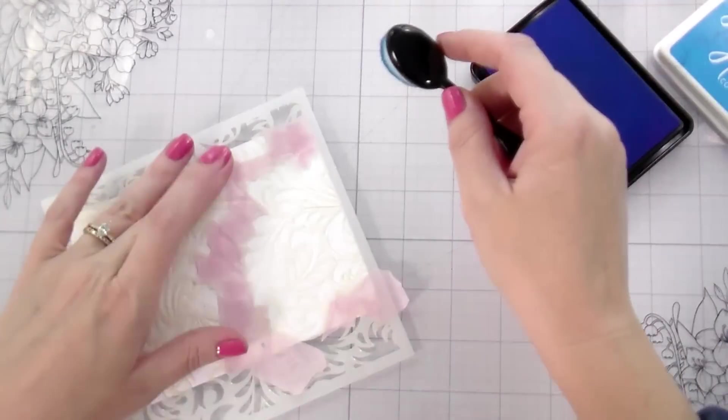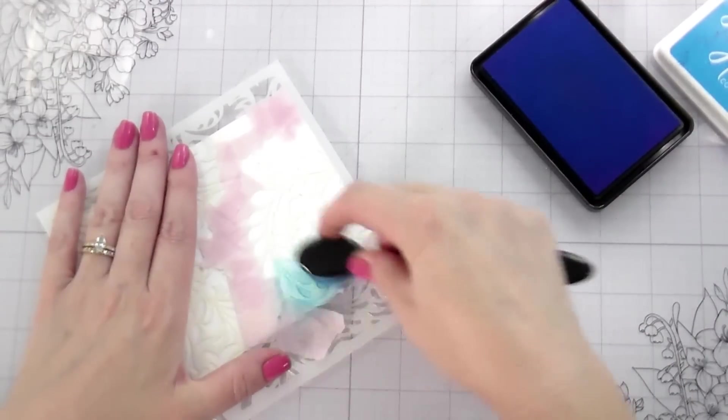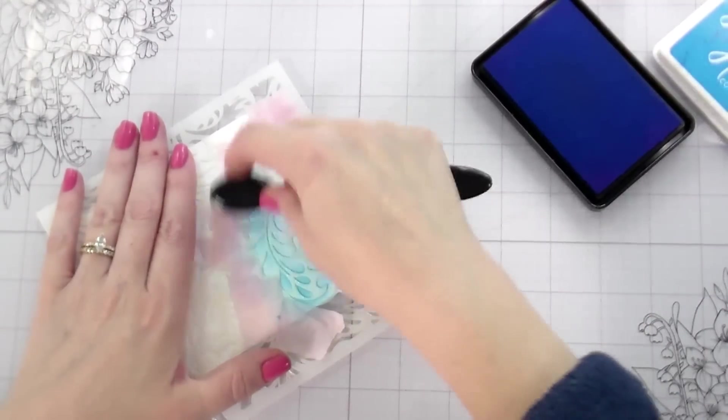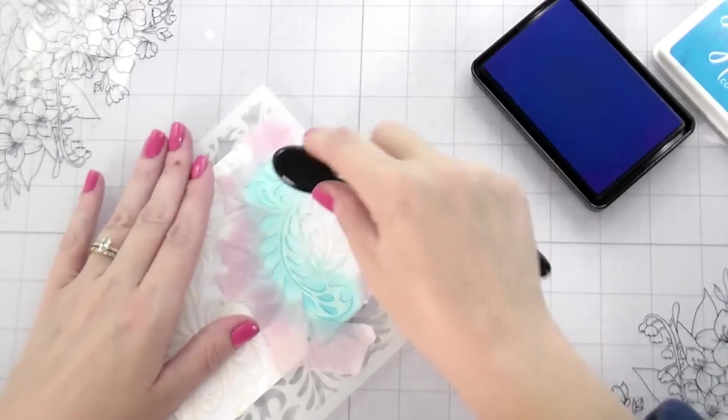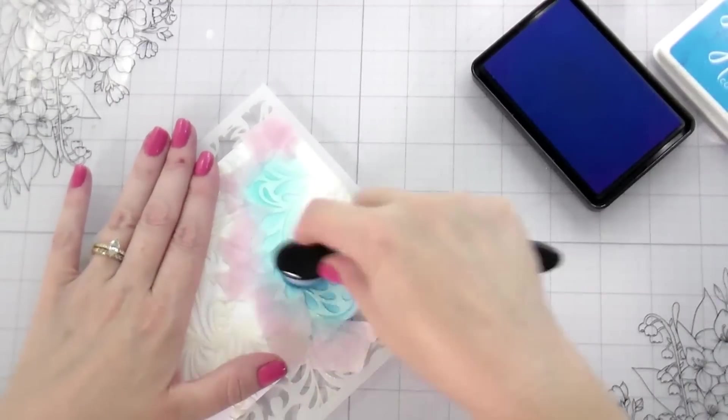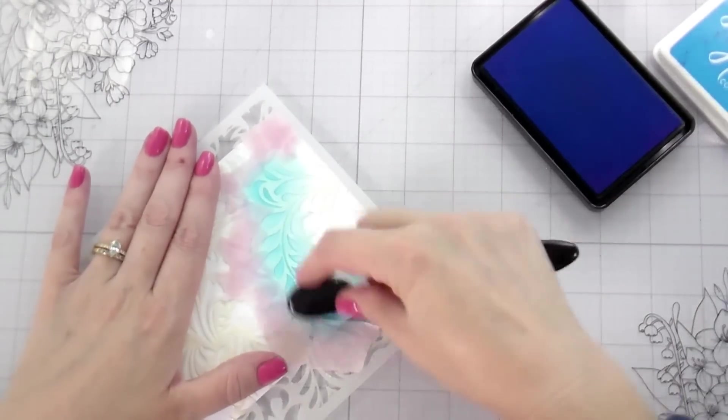But so here, once I have that all taped off, I'm going to put that in place. And then I'm just going to go in with my ink blending brushes and my colors. So I used, what did I use? Summer Sky, Bermuda, and Fresh Lawn for this one. And just pay attention when you're doing your ink blending.